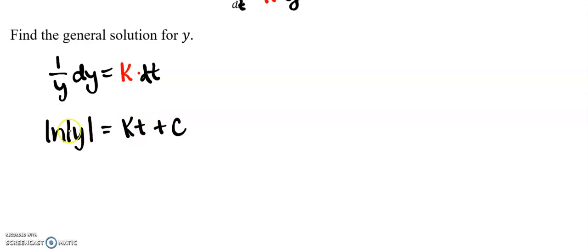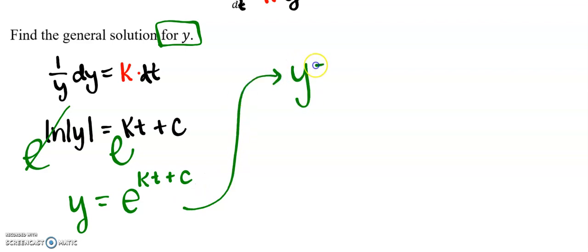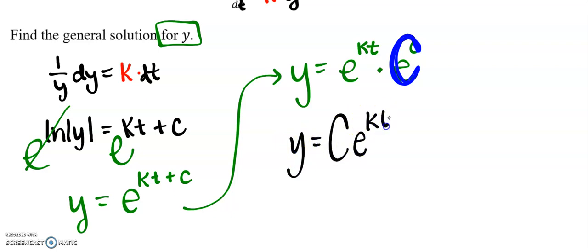Right now, I'm going to solve for y because it says find the general solution. I'm going to e both sides. This will just be y equals e to the kt plus C. I'm going to do kind of a weird mathematical step. I'm going to write this as e to the kt times e to the C. And the reason I'm doing that is because e to the C is really just some brand new constant. And so when I actually write this as a solution solved for y, I have C e to the kt.